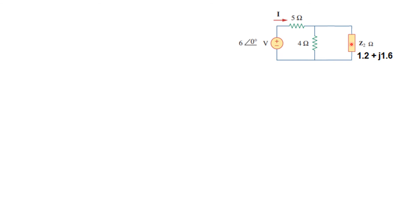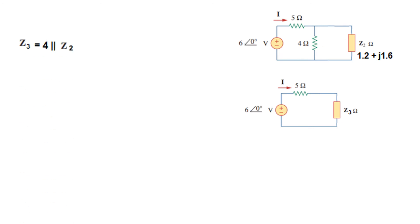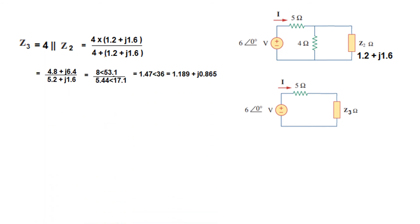Now we solve Z2 in parallel with 4, calling the result Z3. Using the same technique — multiply at numerator, add at denominator — converting into polar form and dividing gives 1.47 at angle 36 degrees. Converting to rectangular gives Z3 equal to 1.189 plus j0.865.